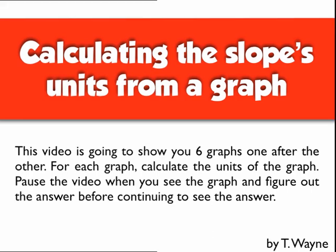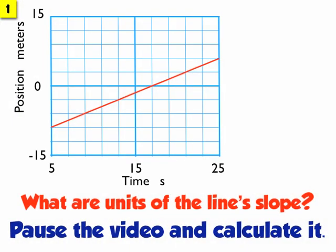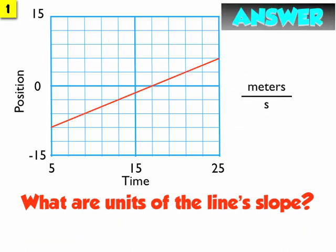Here's the first problem. Here's the first graph. The question is: what are the units of the line's slope? Pause the video and calculate it. The units of the rise divided by units of the run, so it would be meters per second, or m over s.